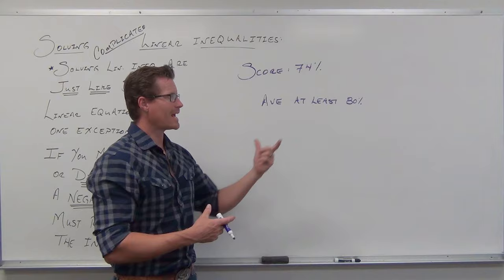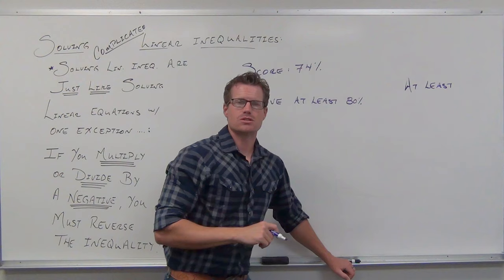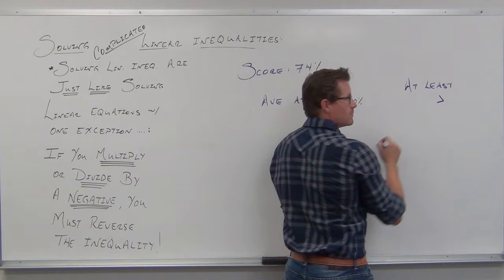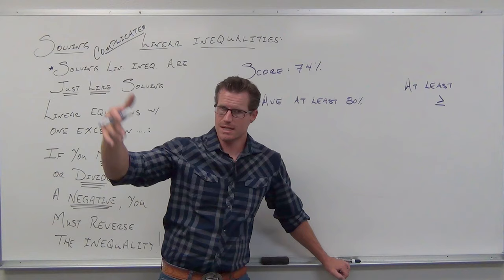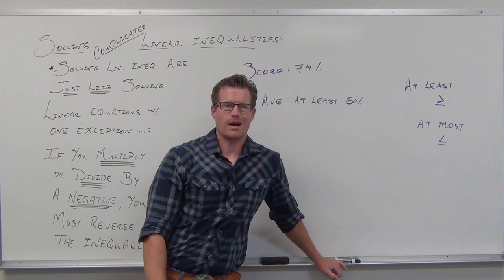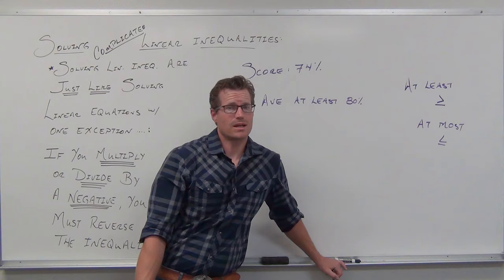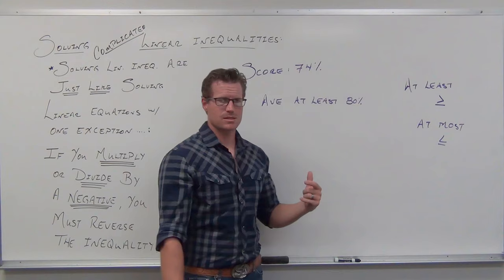Here's a cheat sheet: at least means greater than or equal to — if you have at least $20 in your pocket, you have $20 or more. At most means less than or equal to — at most $5 means you could have $5 or less, but not more. So when you see 'at least,' use greater than or equal to; when you see 'at most,' use less than or equal to.